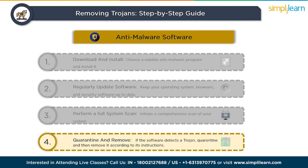So these are the steps you should follow if your system gets affected by a trojan. In conclusion, trojans are dangerous and deceitful cyber threats that can cause severe damage to your computer and compromise your personal information. Armed with knowledge and proper security measures, you can protect yourself from falling victim to these malicious attacks. Always stay vigilant and take precautions when using the internet to ensure your online safety.